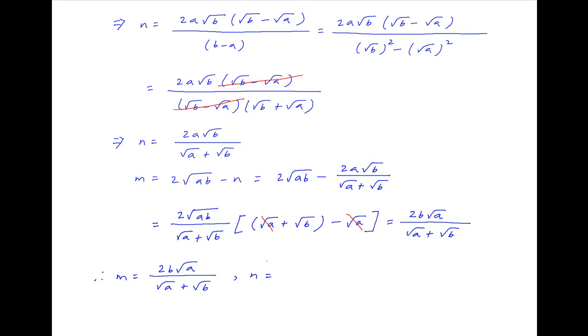Therefore, the final answers are: M = 2B√A / (√A + √B) and N = 2A√B / (√A + √B).